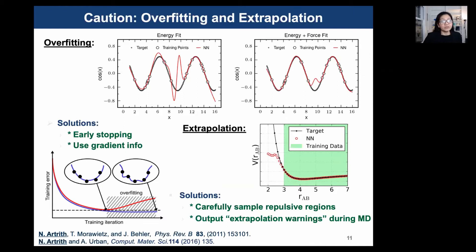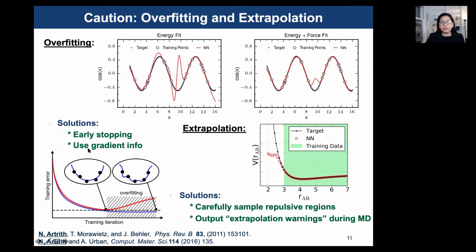Training neural potentials also requires some expert knowledge to prevent overfitting or extrapolation. We must make sure the potentials are robust and reproduce the DFT for our applications, and that physical property predictions are close to experimental data. If a structure is very different from those in the reference data set, the neural potential might extrapolate to unphysical results. We therefore introduce methods to check this — for example, early stopping, use of gradient information, and an extrapolation warning output during MD simulations.